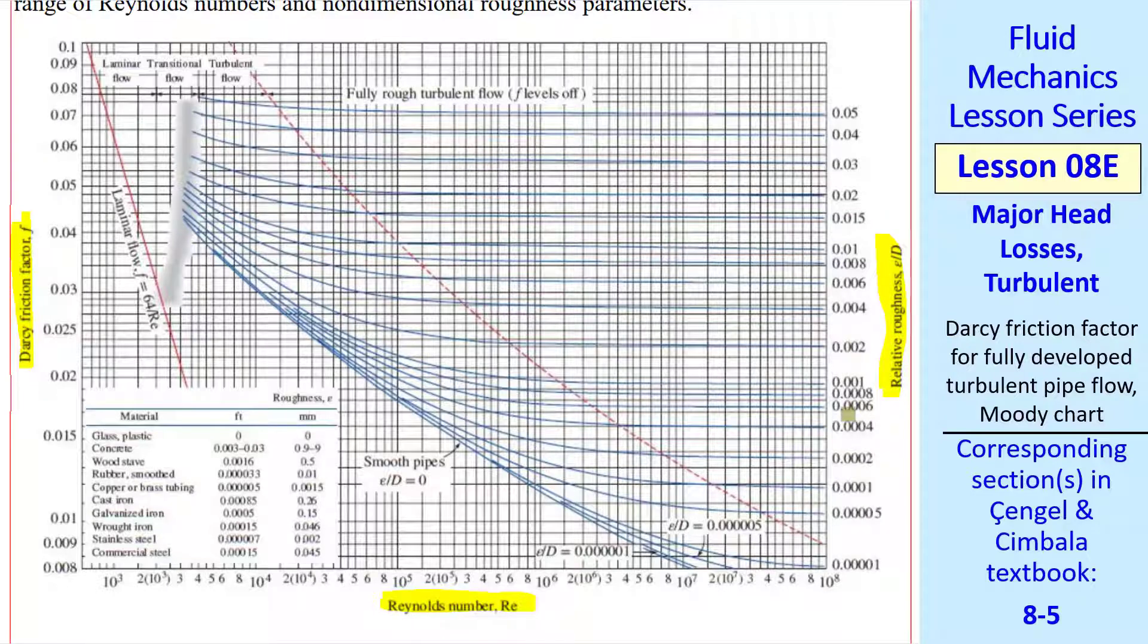This chart shows both turbulent and laminar flow. For laminar flow, F is 64 over the Reynolds number, and that's given by this line. Notice that this is a log-log plot, so 64 over Reynolds number appears as a straight line. This value is 2000, so 2300 is roughly there, and that's where laminar flow typically ends.